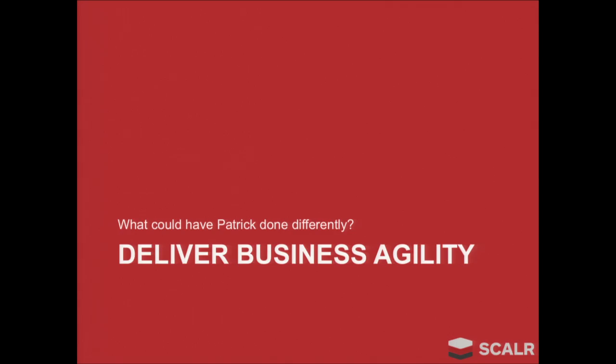The moral of the story is the simple solution isn't just: here's your private cloud, here's OpenStack, go use it and don't touch EC2 again. That's not how we do things. Now that we've seen what Patrick did and why it did not work, we're going to look into what Patrick could have done and what could have made things better. What Patrick should have done is try to deliver business agility to the engineers via OpenStack. So how to do that?